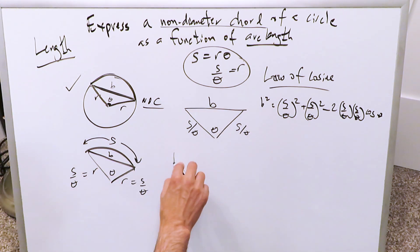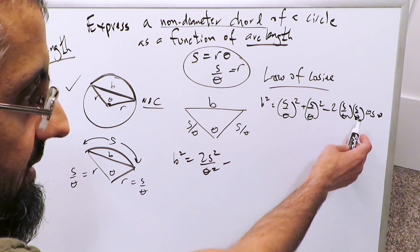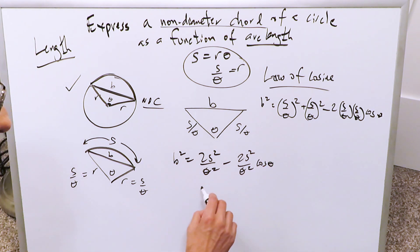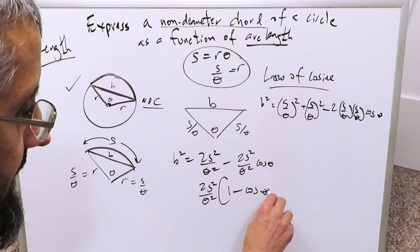You have to simplify that. B square is equal to 2S square over theta square minus 2S square over theta square cosine theta. Why don't you isolate 2S square over theta square, and you're looking here at 1 minus cosine theta.